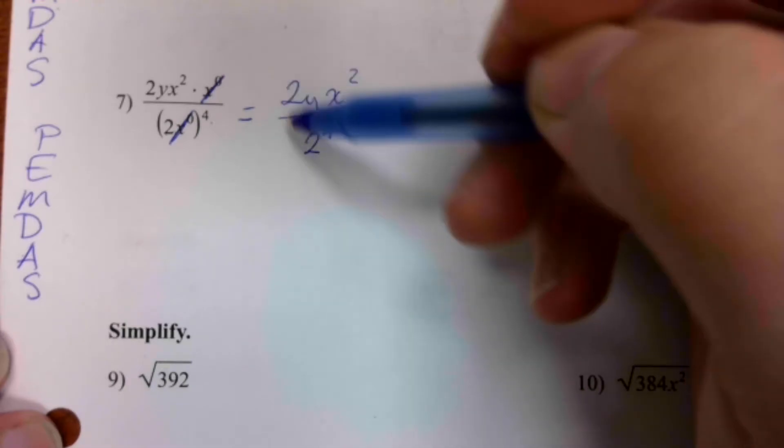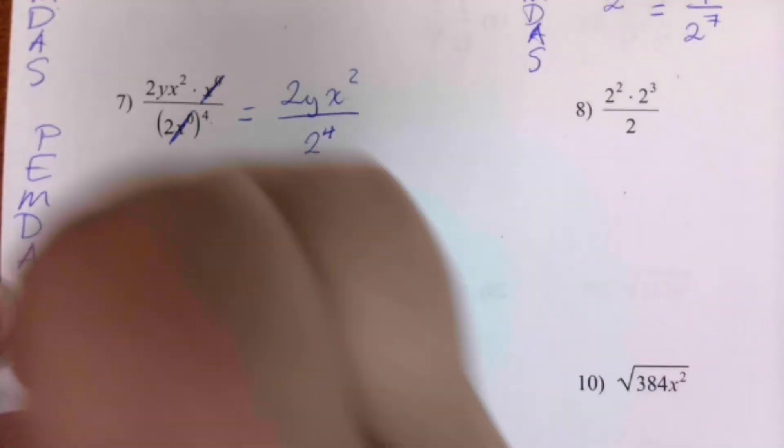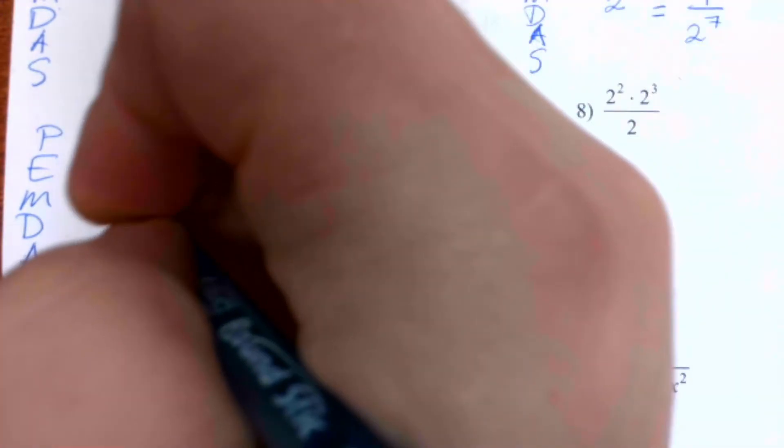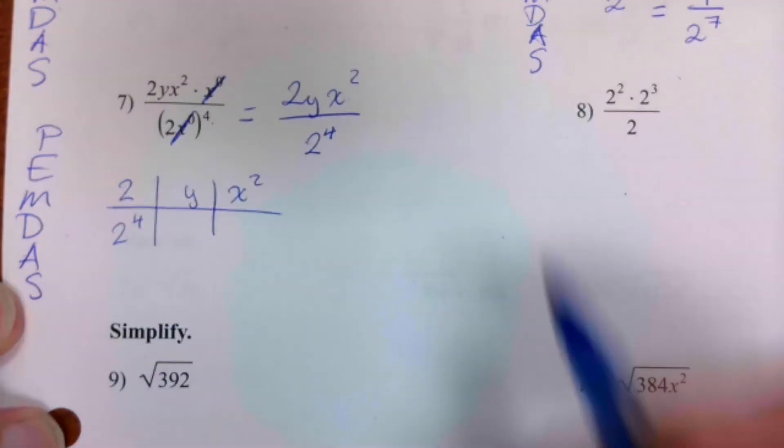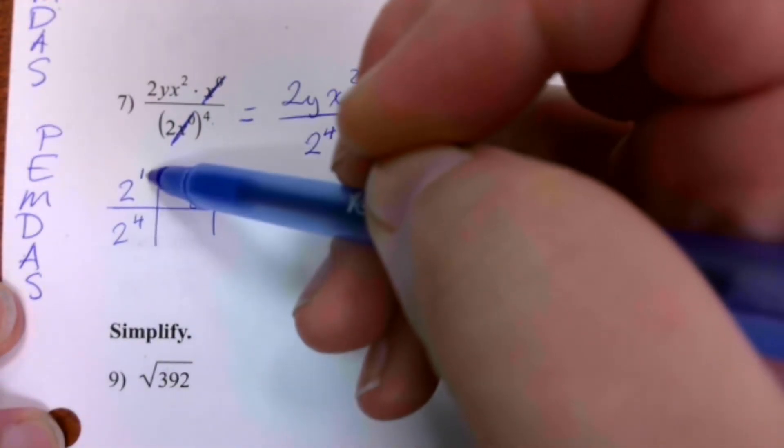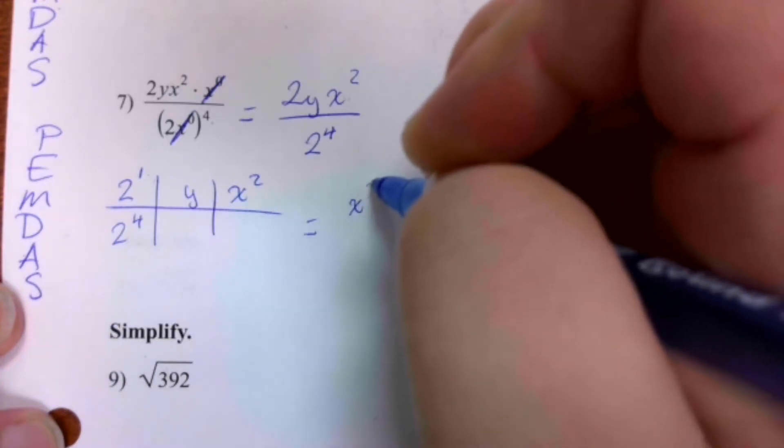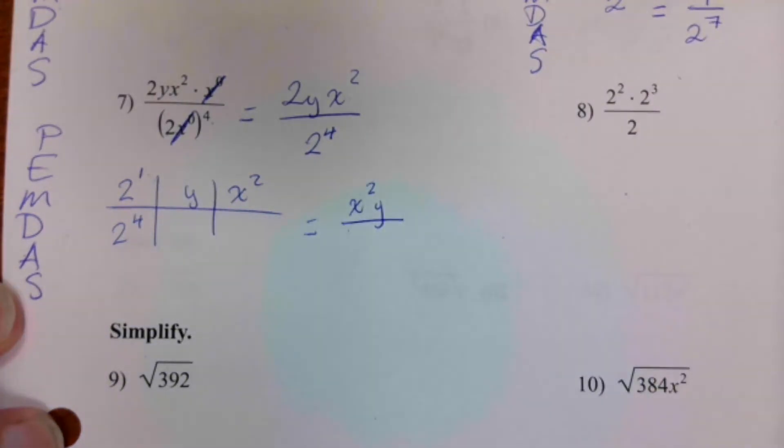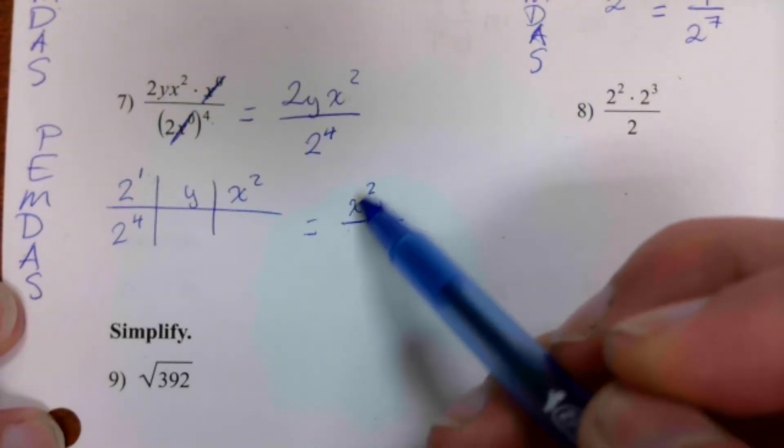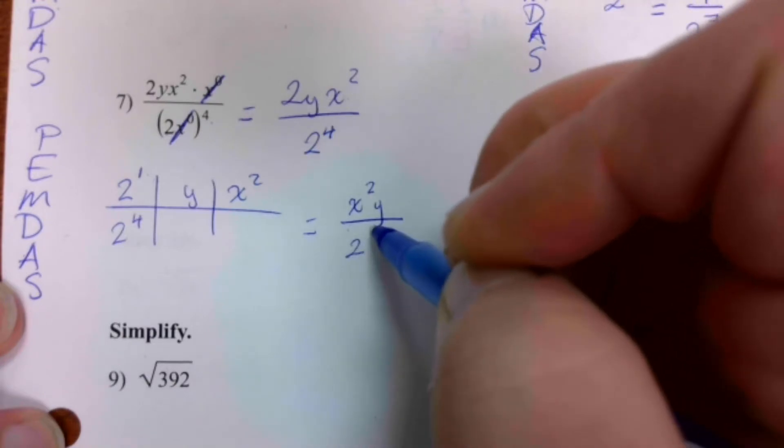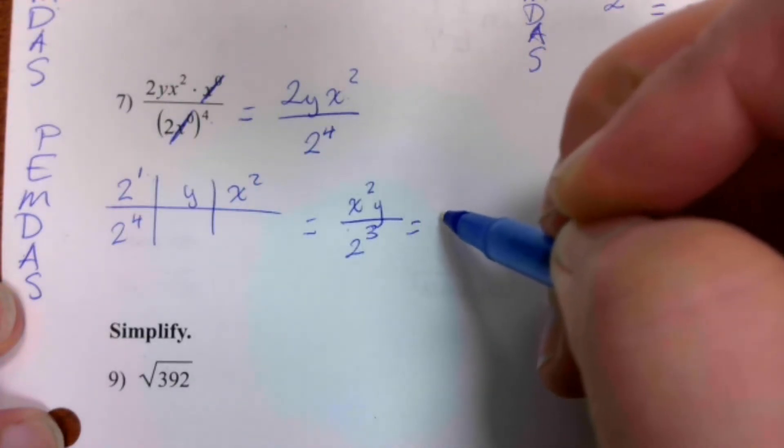The x's and the y's are good, but the numbers are not. I'm going to set up a little organizer to help you see. We're going to subtract the powers: four take away one. I just reordered the letters because it's always in alphabetical order. That's how they're supposed to be, is alphabetical. Four take away one is just three. So this would be the same thing as x squared y over eight.